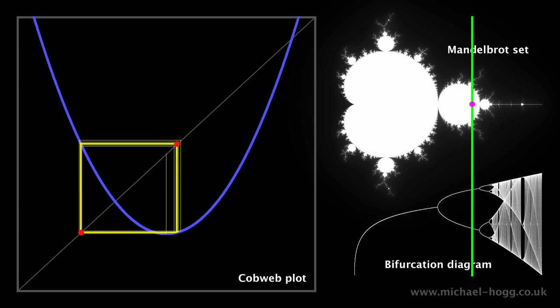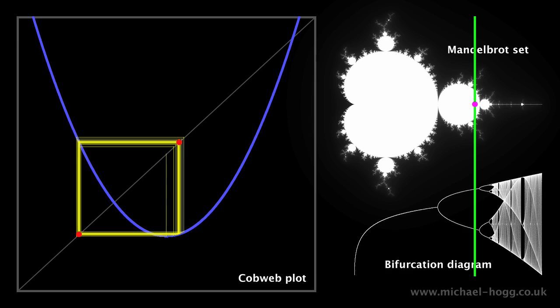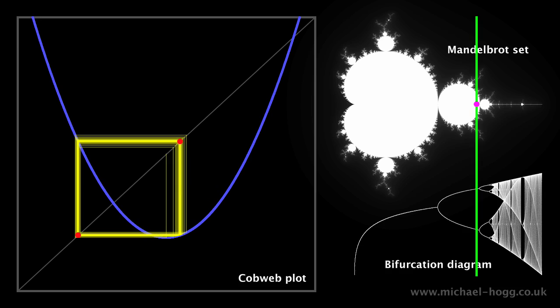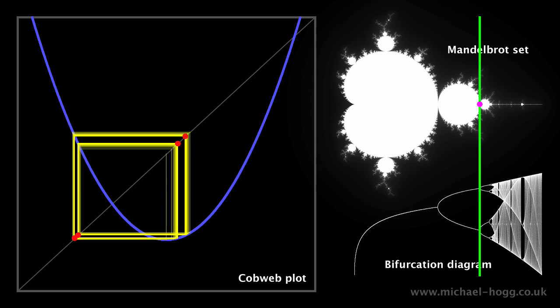In the cobweb plot, the yellow line will suddenly start visiting four red points instead of two. And there it goes.